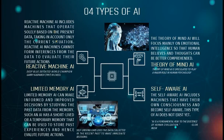Next, we have Theory of Mind AI, which focuses mainly on emotional intelligence so that human beliefs and thoughts can be better comprehended. The Theory of Mind is speculated to play a major role in human psychology. Moving on to the last type of AI — Self-aware AI includes machines that have their own consciousness and become self-aware. This type of AI does not exist yet.